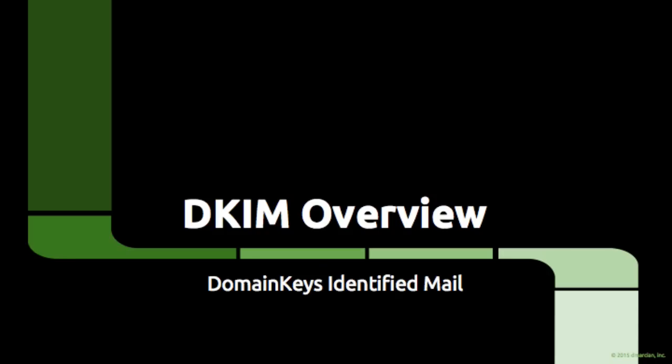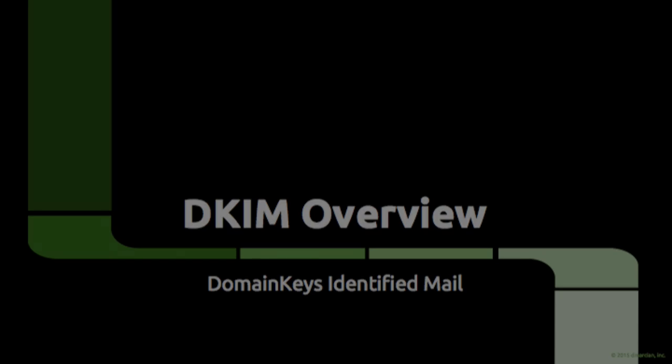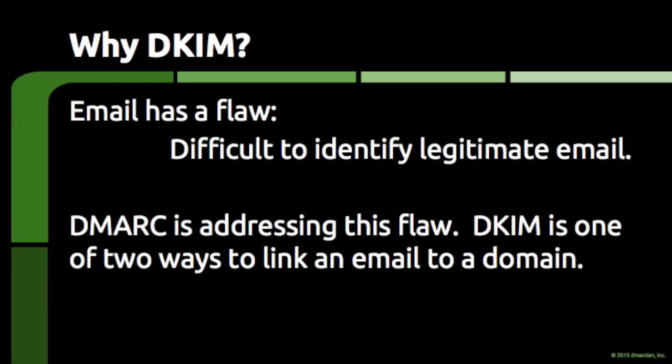This video presents an overview of DKIM, which stands for Domain Keys Identified Mail — a free technology used to link a piece of email back to a domain. DKIM plays a large role in addressing a flaw that has plagued email since the beginning: it's very difficult to identify legitimate email from fake email. The DMARC technical framework was designed to meet this challenge, and DKIM is one of two ways that DMARC uses to try to link a piece of email back to a domain.